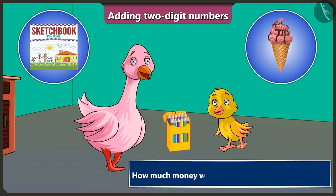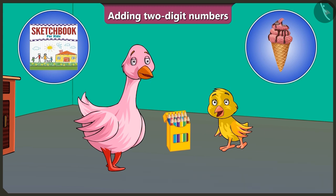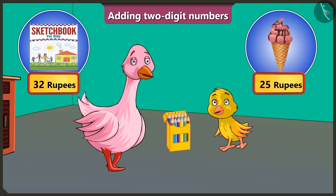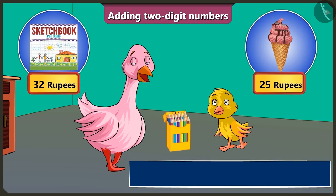So, tell me how much money will you need to buy the two items? Hmm, thirty-two rupees for the sketchbook and twenty-five rupees for the ice cream. Hey, Bilu, but how much money do I have to give in total?